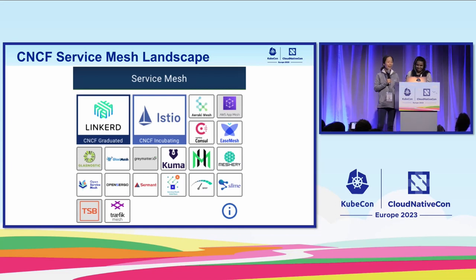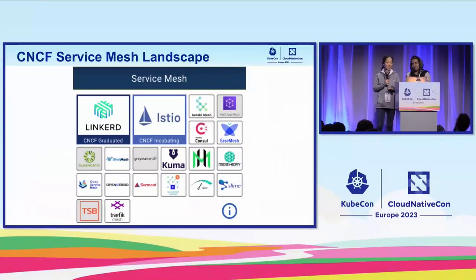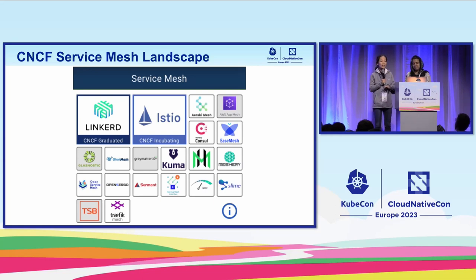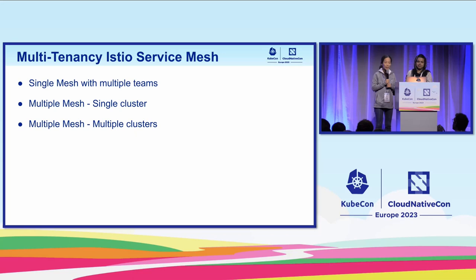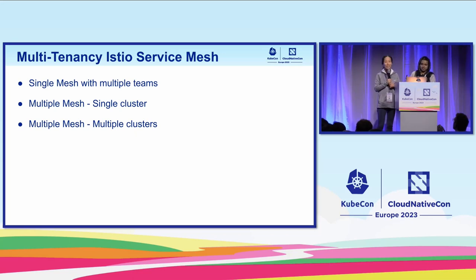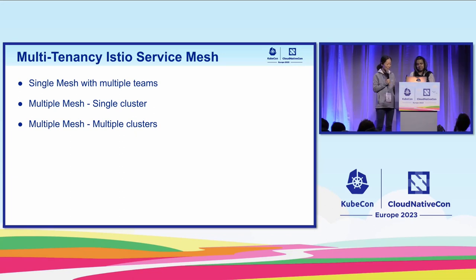If you look at the CNCF service mesh landscape, it's very, very daunting. There are many service mesh projects out there. The ones you've most heard of are Istio service mesh and Linkerd. Istio is a CNCF incubating project. As a project, we're working very hard to make it a graduation project at CNCF. Now we're going to jump in to talk about multi-tenancy Istio service mesh, since both of us are on the Istio project and we are inherently familiar with it.